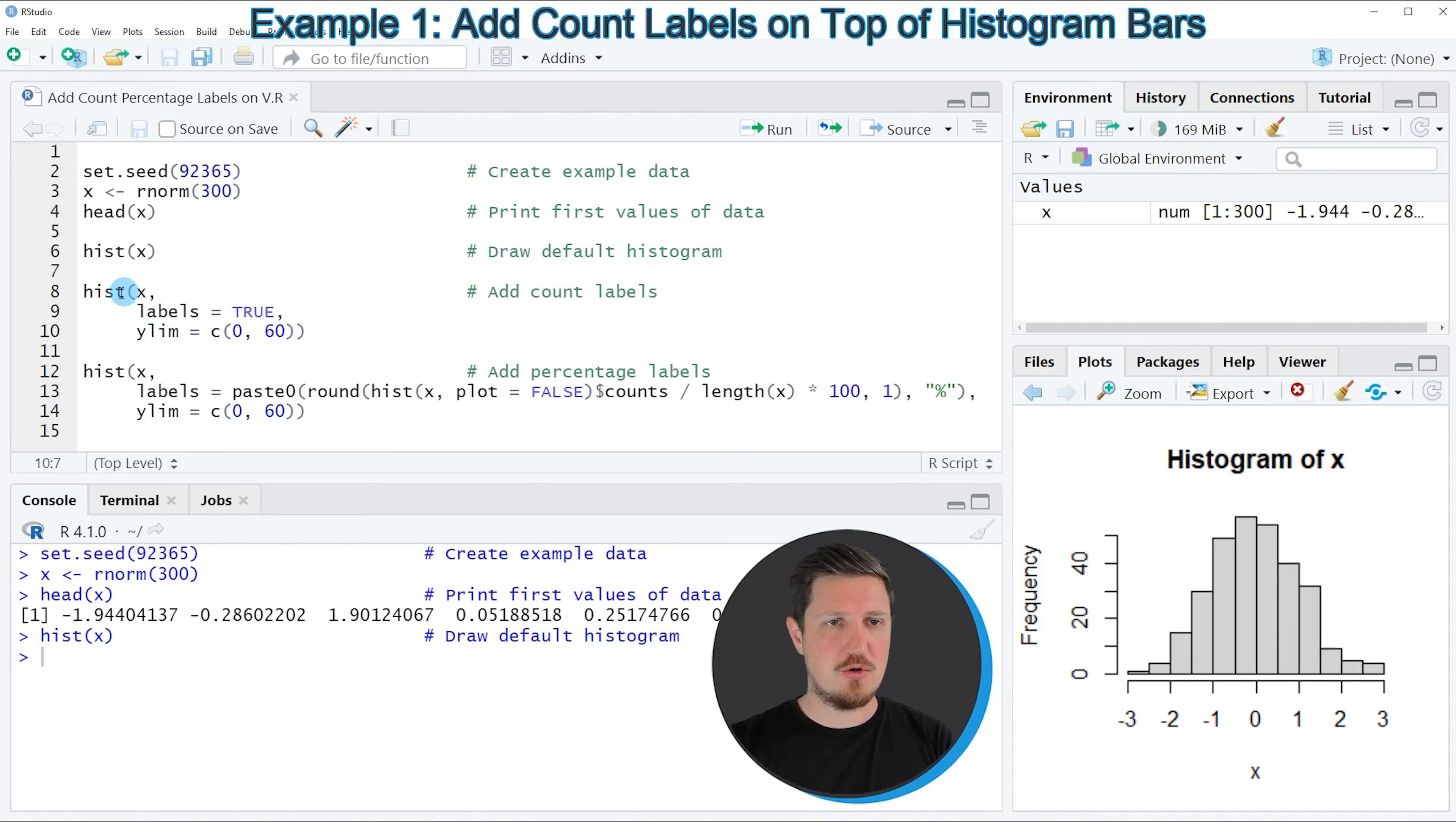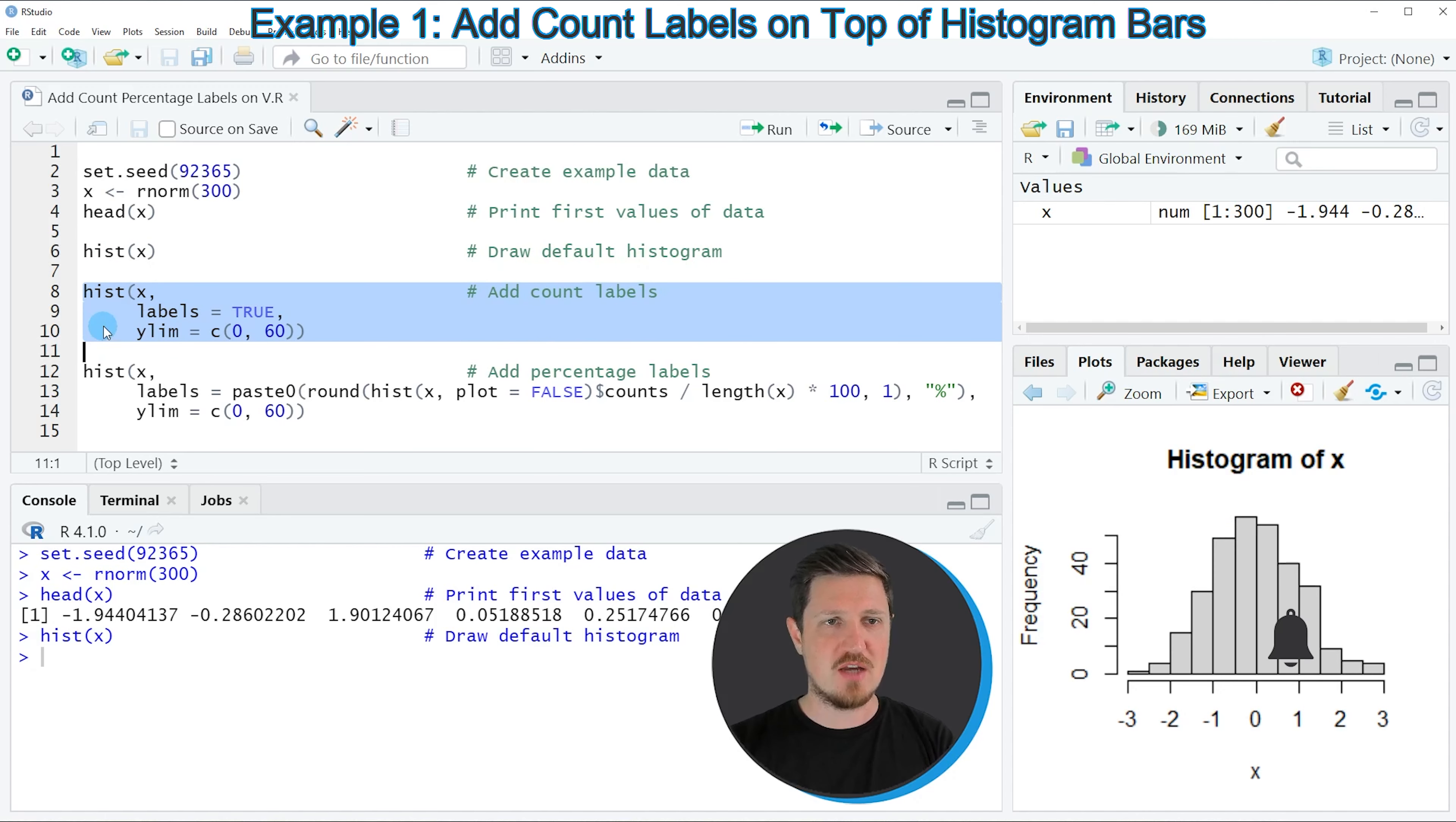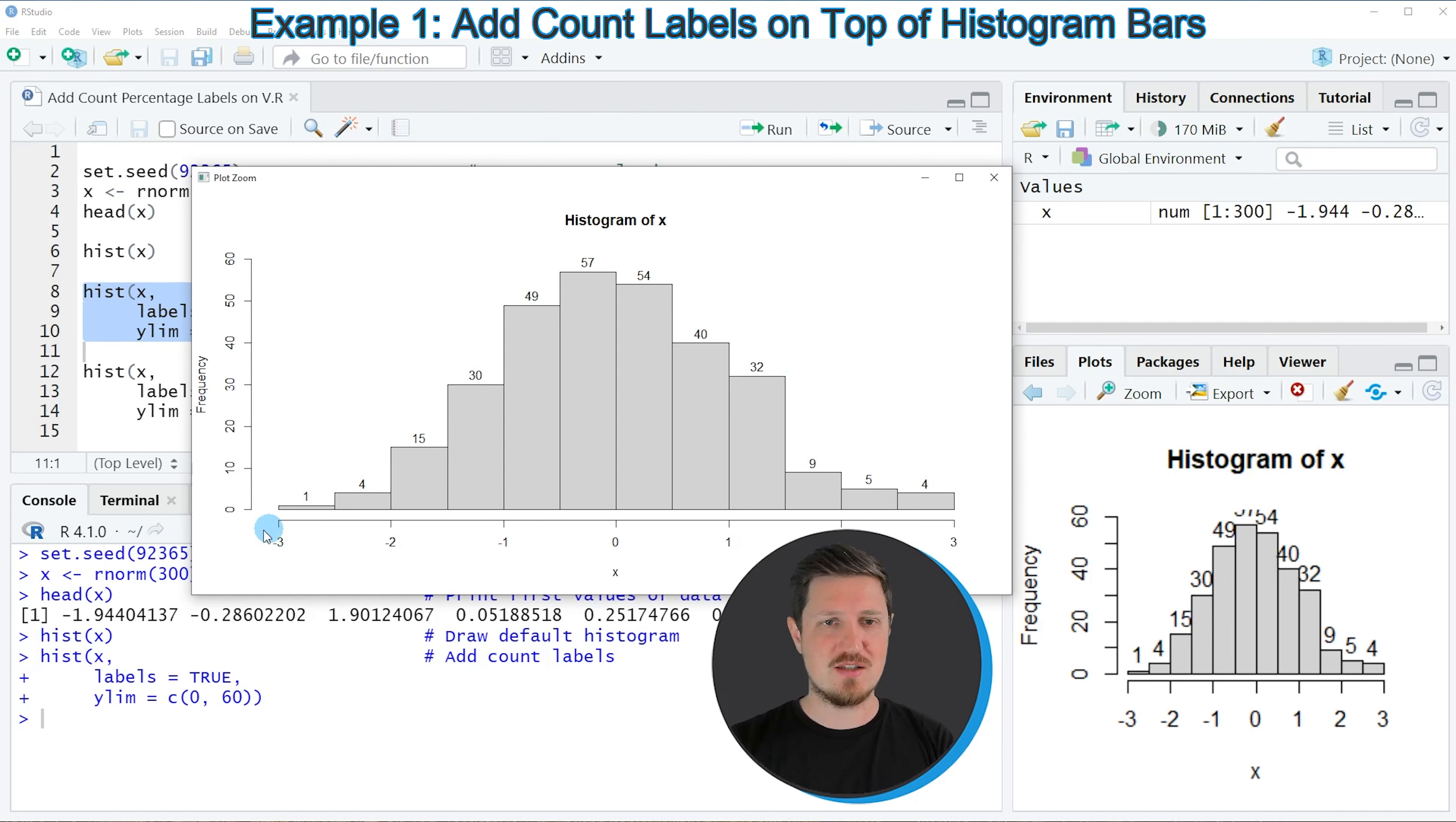In the next part of the tutorial I will show you how to add count labels on top of the bars of this histogram, and we can do that as you can see in lines 8 to 10 of the code. In these lines of code I'm again applying the hist function to our numeric vector. However, this time I'm also specifying the labels argument to be equal to true and I'm also increasing the ylim because the labels will also take some space in our histogram. So if you run lines 8 to 10 of the code you can see at the bottom right that our histogram is updated. We can also enlarge this histogram by clicking on the zoom button and then you can see that we have created a new histogram which is showing the count values of each bar on top of the bar.